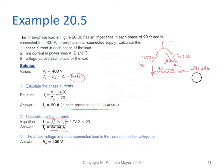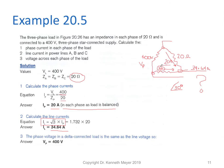Why is the line current not simply 20 plus 20 equals 40 amps? It's because there is a 30 degree angle between the two currents, therefore we end up with 34.64 amps and we have to use the formula I_line equals square root of 3 multiplied by I_p.